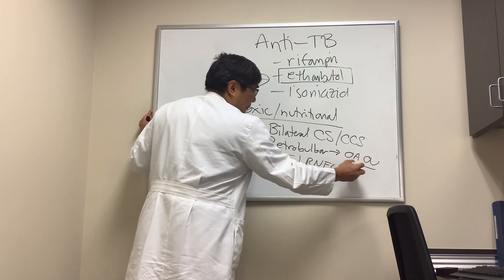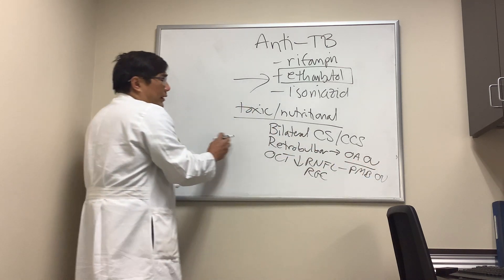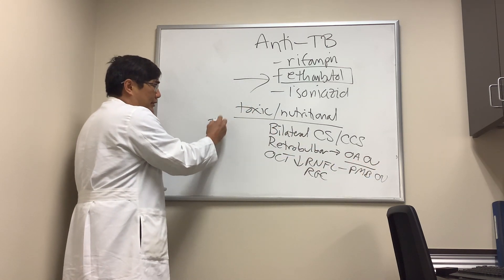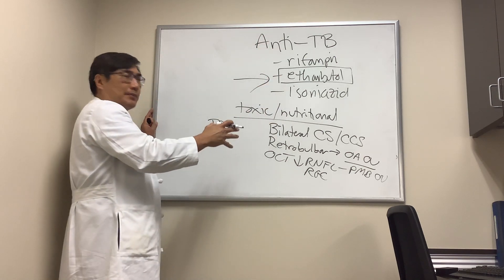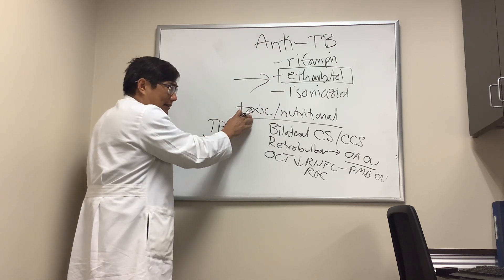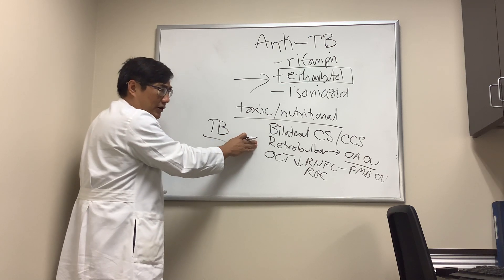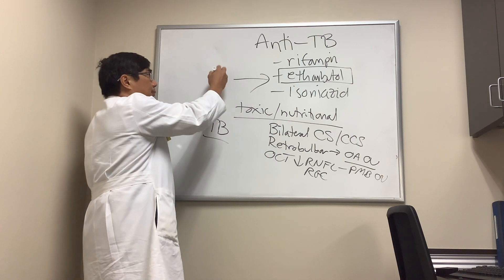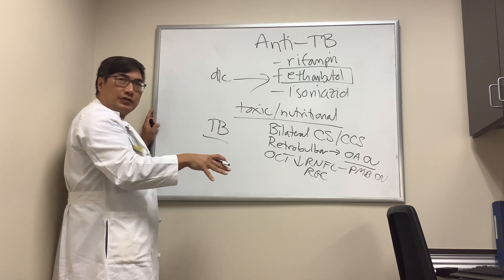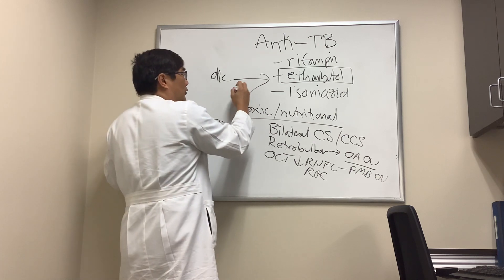That's going to be the papillomacular bundle bilaterally. So if we have a patient who has tuberculosis, is on anti-tuberculosis therapy, and develops what looks like a toxic optic neuropathy — bilateral central scotoma, normal disc or pale disc — you stop the medicine. However, if they keep getting worse, make sure they actually stopped the medicine, but the second choice is going to be isoniazid.